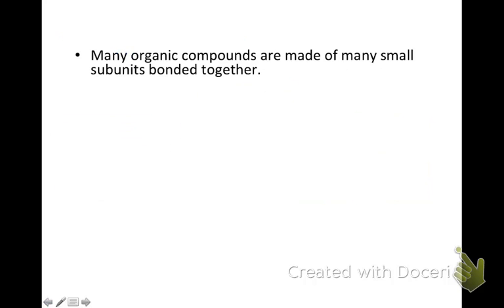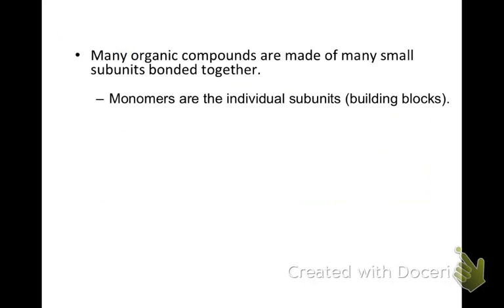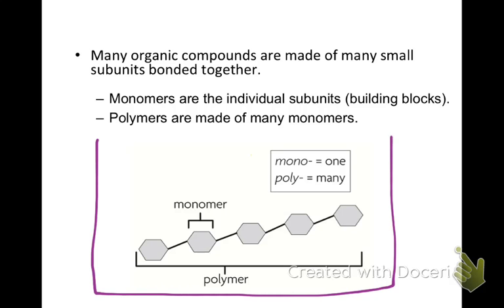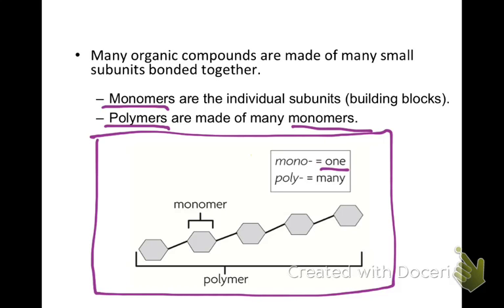Follow along in your fill-in notes. Many organic compounds are made of many small subunits bonded together. Monomers are the individual subunits or building blocks, and polymers are made of many monomers. It's a good idea to write that 'mono' means one and 'poly' means many.